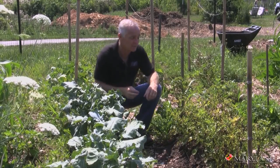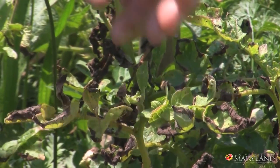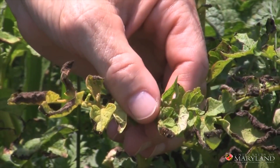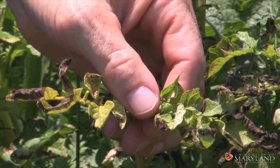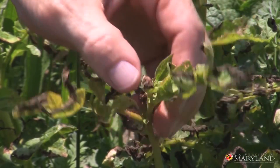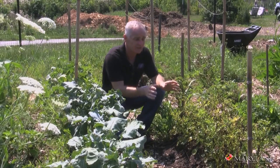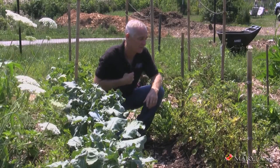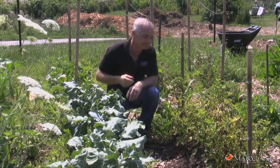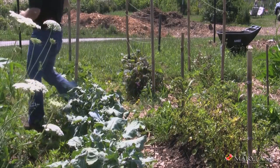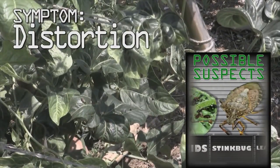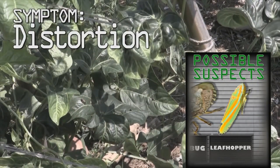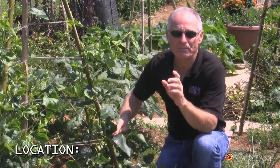Look at these potatoes — thousands of leaf hoppers have moved over here. They put their beaks in, suck the juice out, and cause a type of discoloration called hopper burn. These two plants are in real trouble right now.